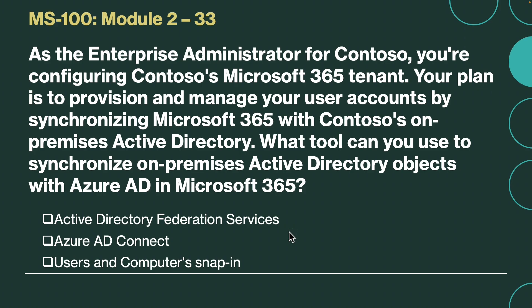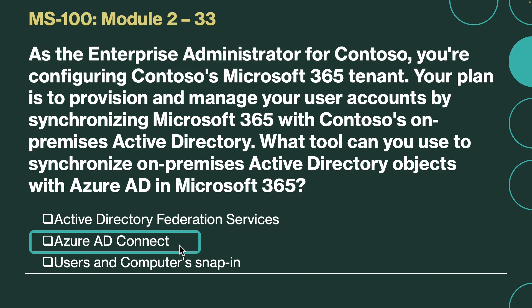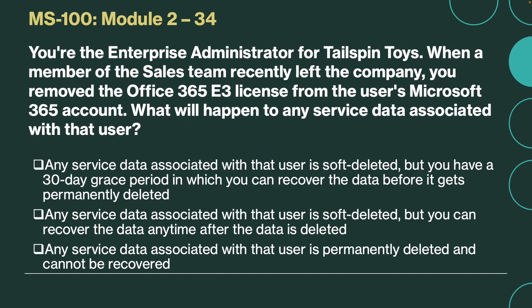As the enterprise administrator for Contoso, you are configuring Contoso's Microsoft 365 tenant. Your plan is to provision and manage your user accounts by synchronizing Microsoft 365 with Contoso's on-premises Active Directory. What tool can you use to synchronize on-premises Active Directory objects with Azure AD in Microsoft 365? The correct answer is Azure AD Connect. Azure AD Connect synchronizes on-premises Active Directory objects with Azure AD in Microsoft 365.